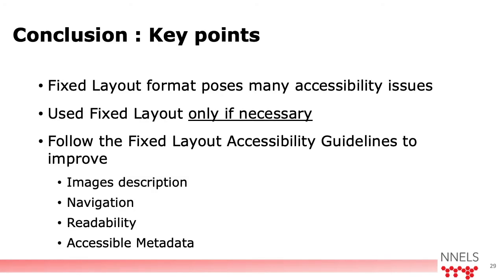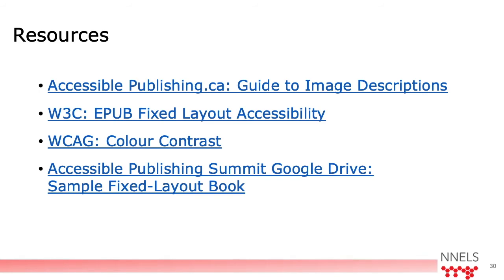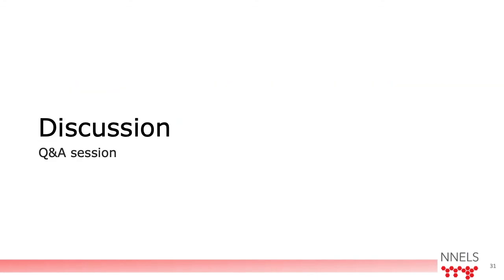In conclusion, here are some key points from this presentation. First, remember that fixed layout formats pose many accessibility issues. Use fixed layout only if necessary, and if you do, follow the fixed layout accessibility guidelines to improve image description, navigation, readability, and accessible metadata. I encourage you to visit accessiblepublishing.ca for the guide to image description, the W3C EPUB fixed layout accessibility resources, and the WCAG color contrast guidelines. Also note that in the Accessible Publishing Summit Google Drive there is a sample fixed layout book. Thank you for listening, and now we can go to the discussion session.